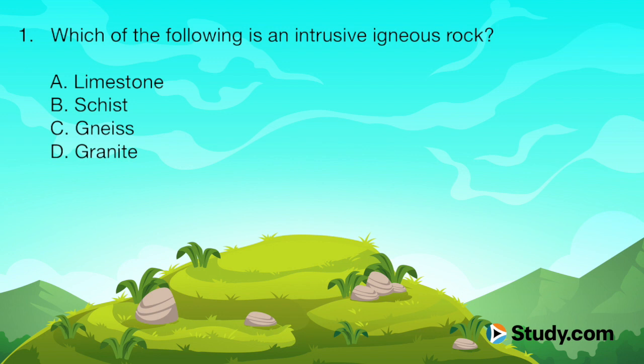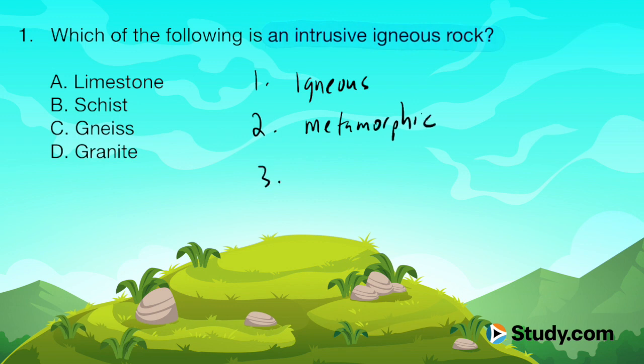Question 1. Which of the following is an intrusive igneous rock? A. Limestone, B. Schist, C. Gneiss, or D. Granite? So the question is asking us about an intrusive igneous rock. Just a tip about earth science: there are three major types of rocks — igneous, metamorphic, and sedimentary.